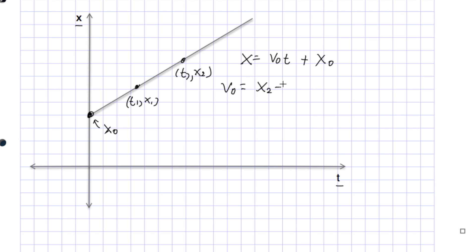And we're getting v naught as x2 minus x1 over t2 minus t1. But what's actually happening now is that these are now real physical quantities.